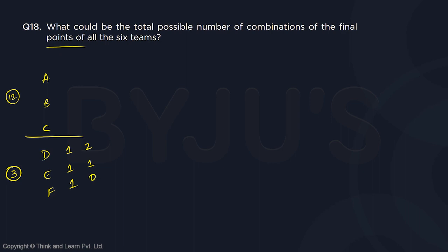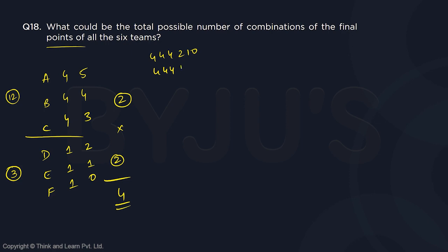So the four cases when bottom has 3 points are: 4, 4, 4 with 2, 1, 0; and 4, 4, 4 with 1, 1, 1; and 5, 4, 3 with 1, 1, 1; and 5, 4, 3 with 2, 1, 0. These are the A, B, C, D, E, F point distributions for the scenario where 3 points go to the bottom group.